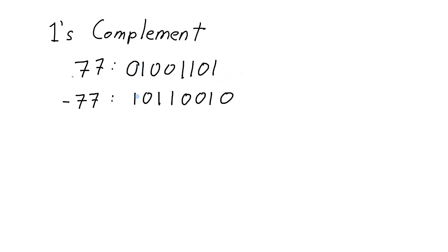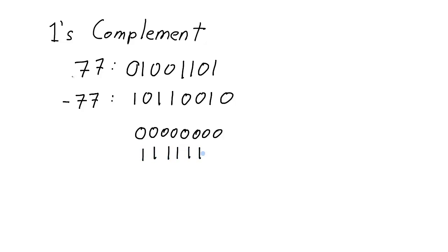If you compare all the bits of 77 to negative 77, you'll notice that they're inverses of each other. In the 1's complement system, it's actually easier to implement addition and subtraction in hardware — you need less hardware than in the sign and magnitude system. However, the 1's complement system still has the problem of 0 having two representations: all 0 bits, or all 1 bits.